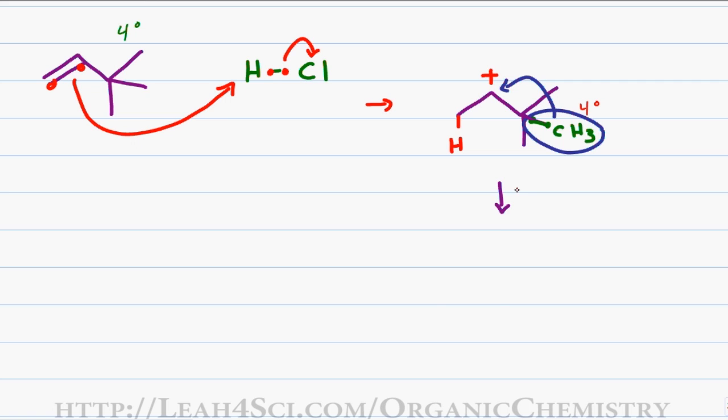This gives me a methyl group in the secondary, now tertiary position, and a carbocation in the newly formed tertiary position. This happens rather quickly, and so when the chloride ion comes to attack, it winds up attacking the tertiary carbocation to give me a final product where the chlorine is added in the tertiary position.